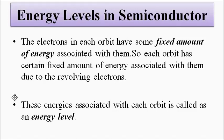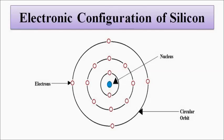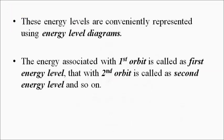From Bohr's atomic model we concluded that the electrons in each orbit have a fixed amount of energy associated with them, because of the orbit in which they are revolving around the nucleus. These energies associated with each orbit are called energy levels. For example, for silicon, each orbit will have a certain fixed amount of energy associated with it, which can be conveniently represented with the help of energy level diagrams.